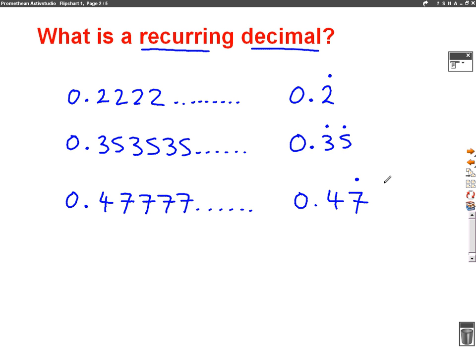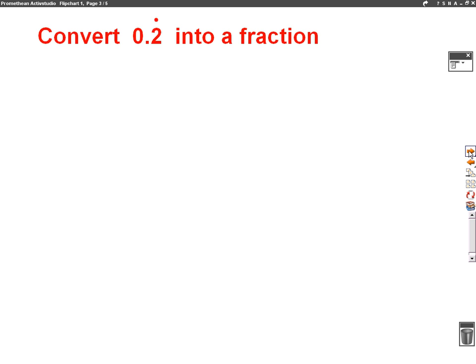So this lesson is all about how do we turn these decimals into fractions. And it's quite an easy way to learn how to do that, and we'll do a couple of examples, and I'll have some practice questions at the end for you to have a go at. So here's our first question. Convert 0.2 recurring into a fraction.